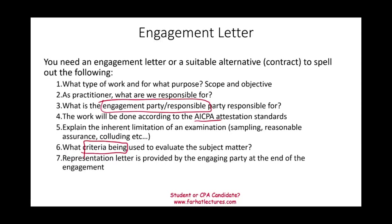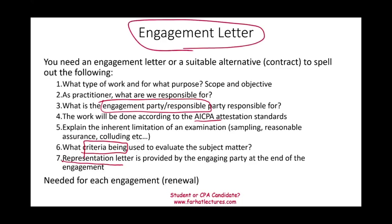We also have to understand that we need a representation letter by the end of the engagement. So we tell the engaging party that at the end of the work, we need a representation letter from them confirming what they told us — that's what the representation letter is. We need an engagement letter for each engagement, and for next year, if we're doing the engagement again, we also have to request an engagement letter or somehow communicate the renewal, directly or indirectly.